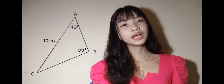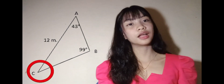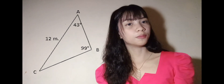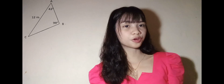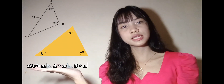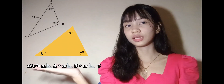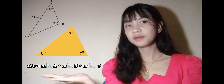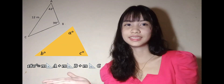To find the unknown angle of our oblique triangle, we can use our formula: 180 degrees is equal to angle A plus angle B plus angle C.